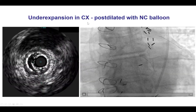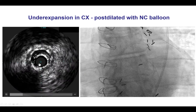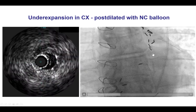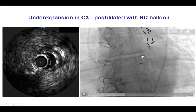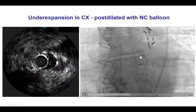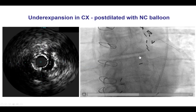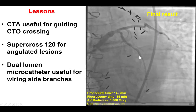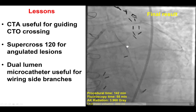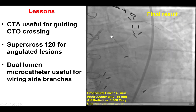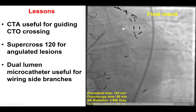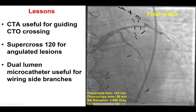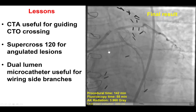The circumflex stent was underexpanded as seen by intravascular ultrasound, so we performed high-pressure balloon inflation with a non-compliant balloon. After doing that, we restored flow into the distal circumflex while maintaining good flow into the LAD, which of course was occluded further down.